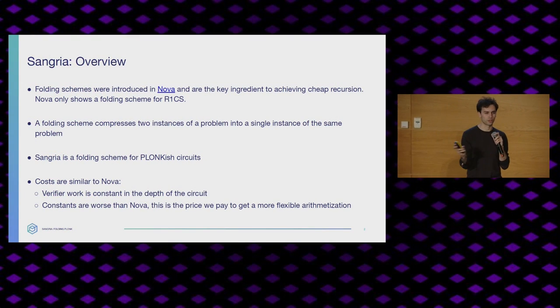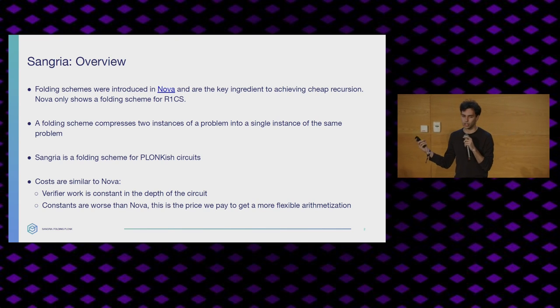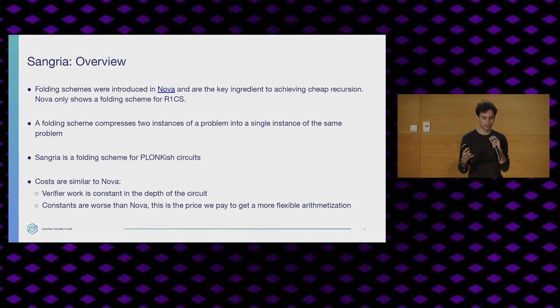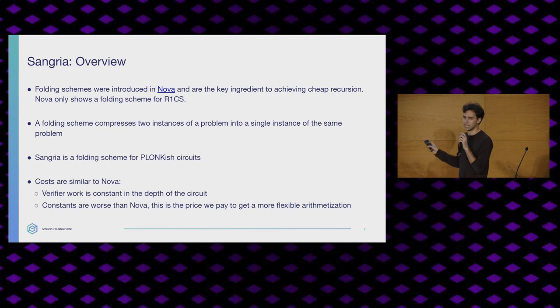I hope 5 p.m. is an appropriate time to have some Sangria. It's not the kind that you might want, but hopefully you'll like it. I'll start with a bit of an overview. Don't worry if you don't understand all the terms — this is a bird's eye view and we're going to define them. Sangria is a folding scheme. Folding schemes were introduced in Nova; they're a cryptographic primitive, and they're the key to getting cheap recursion in Nova. Nova shows how to do folding schemes for R1CS specifically.